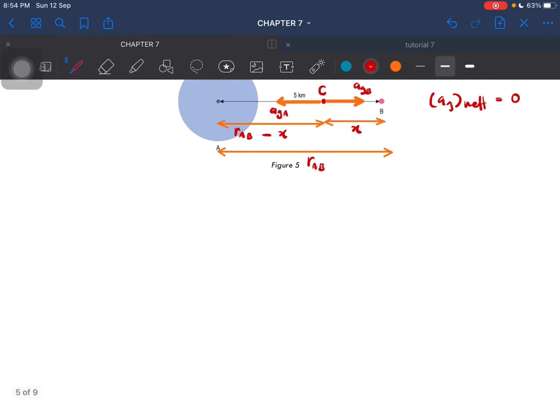Now, at point C, we can say that the gravitational field strength, the net gravitational field strength is equal to 0. However, we do not have that value of X, the distance from point B to point C. So what we have to do is we can let the gravitational field strength by A to be equal to the gravitational field strength by mass B.